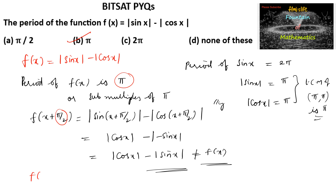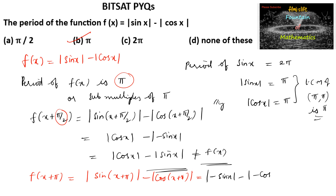We can verify: f(x + π) = |sin(x + π)| - |cos(x + π)| = |-sin x| - |-cos x| = |sin x| - |cos x| = f(x). Since f(x + π) = f(x), π is indeed the period. So option B is correct.